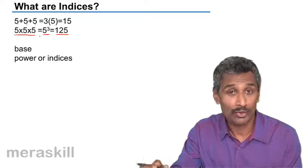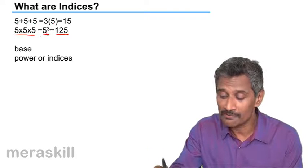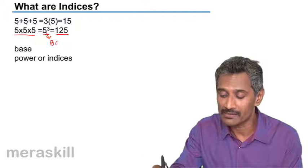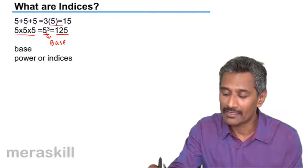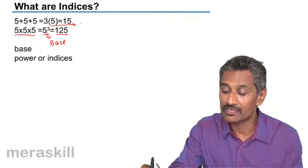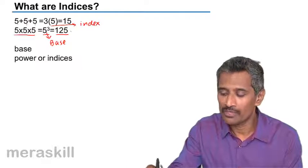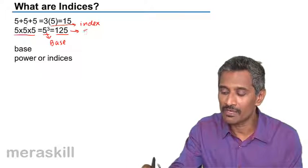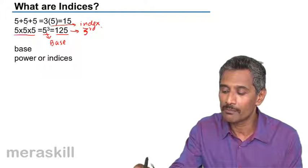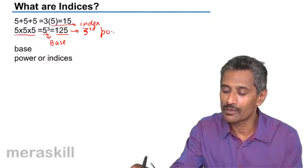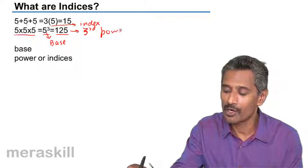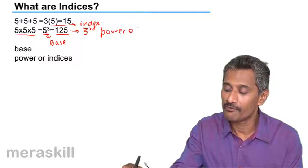No guesses here — 5 is called the base, and 3 is the index. And 125, we call it the third power of 5.